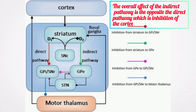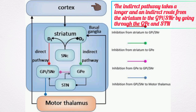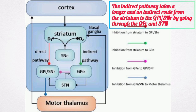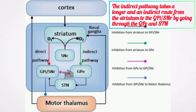The overall effect of the indirect pathway is the opposite of the direct pathway, which is the inhibition of the cortex. The indirect pathway takes a longer and indirect route from the striatum to the internal globus pallidus and the substantia nigra pars reticularis, by going through the external globus pallidus and the subthalamic nucleus.